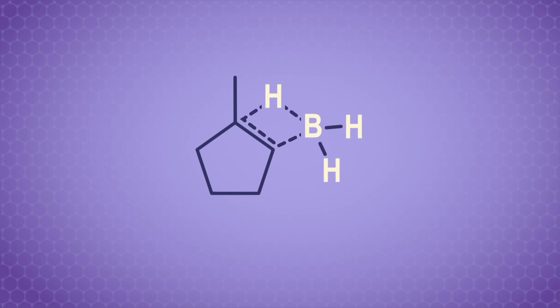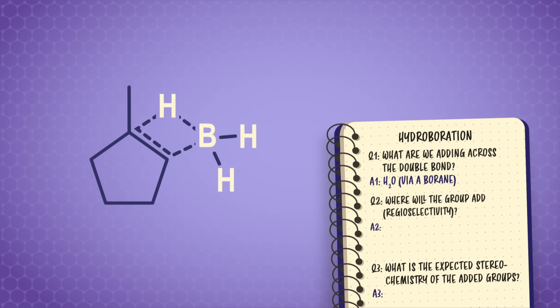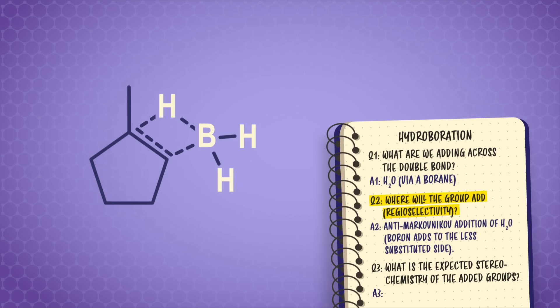And our four-member transition state looks like this. We show the remaining two H's from BH3 still on the boron, but in reality, those hydrogens can also add to two other alkene molecules. So to answer question number two, this is anti-Markovnikov addition. The boron reagent is big, so the smaller hydrogen has to be added to the more substituted carbon. For question number three, because the B and the H are still attached during this funky, concerted reaction, they have to add to the same side of the ring. So hydroboration is always syn addition.